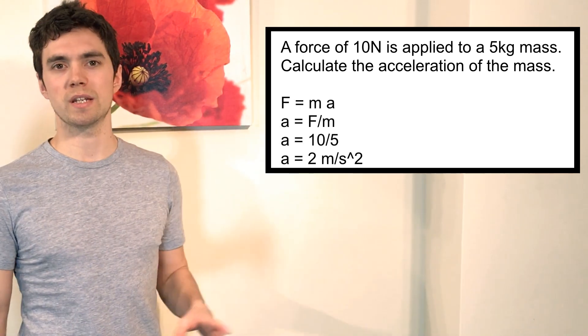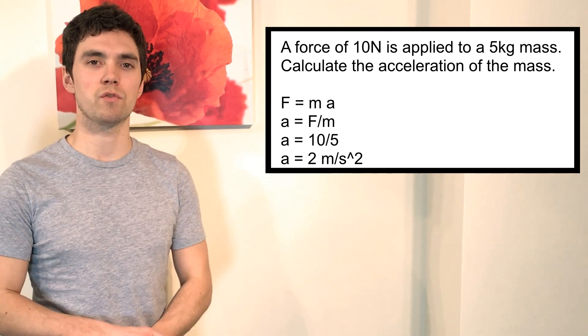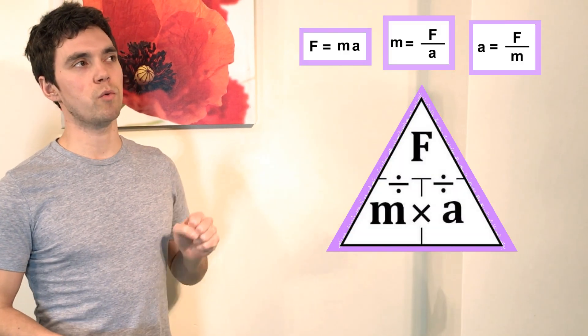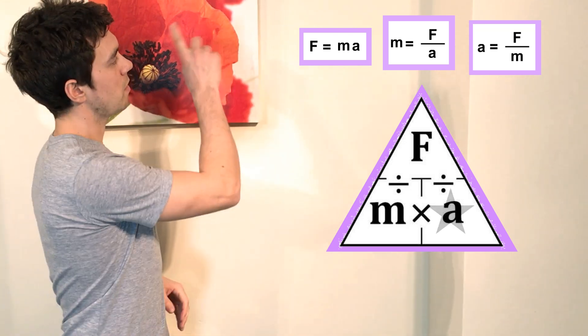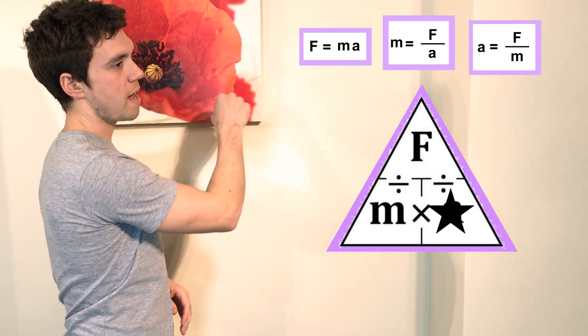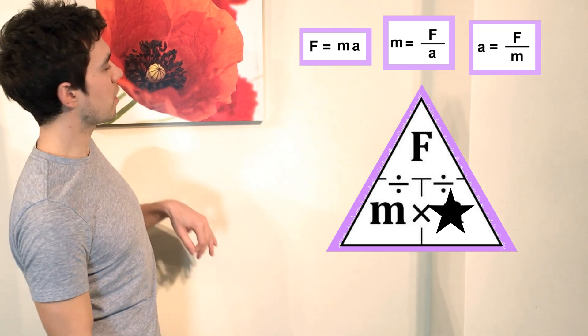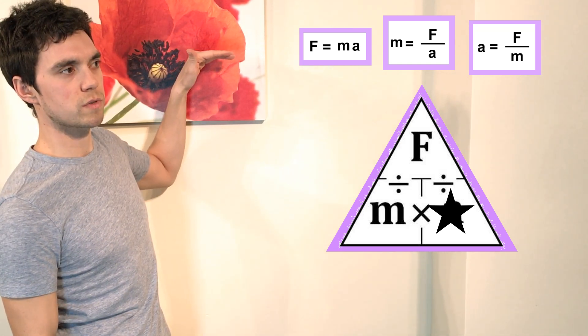And then you've literally just got to put the numbers in. It's the easiest maths at the most basic level. You go F equals MA. Well, it's given me F, it's given me M, it wants me to find A. F over M equals A. I think it was 10 over 5, and there you've got your acceleration.